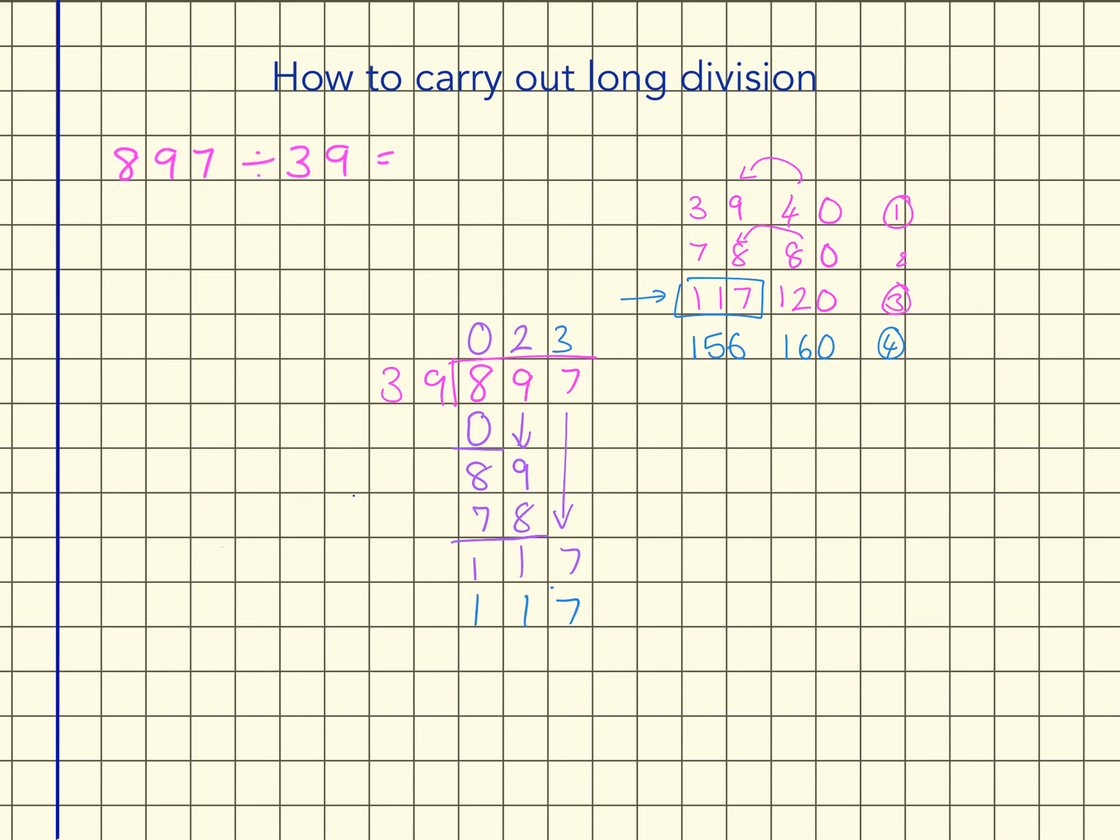So that's three groups. So I subtract that and I end up with all zeros. So that shows me very clearly that 897 divided by 39 equals 23.